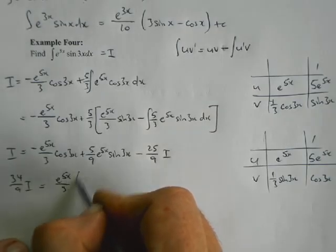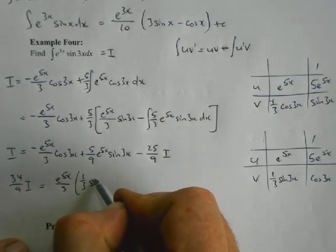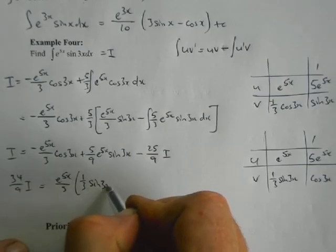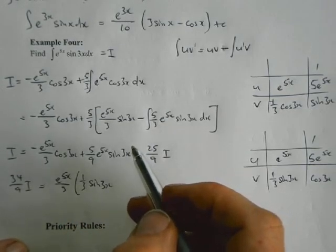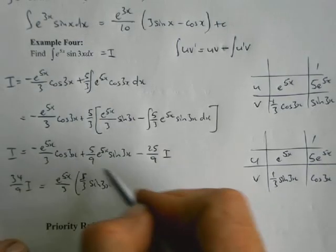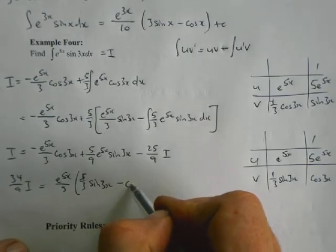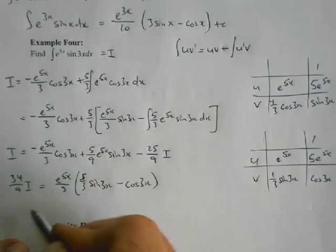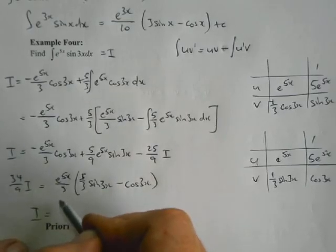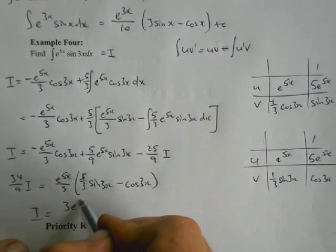I could certainly pull out an e to the 5x over 3 quite happily. And again, putting the positive one first, I'll give me one third sin 3x. That one third with 5 thirds gives me 5 there, minus we're taking the e to the 5x out, it's just cos 3x.